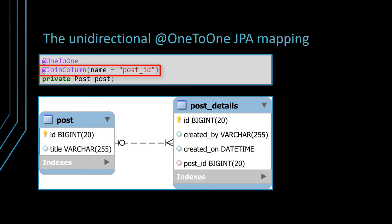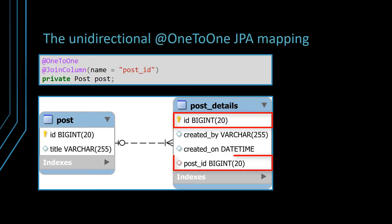In our case, the JoinColumn annotation is redundant since the postId foreign key column is expected to be found in the postDetails table. The problem with this mapping is that the primary key and the foreign key columns are separated. That means we need an index for the primary key and another one for the foreign key. So a better mapping would be if we could use a single column which is both the primary key of the child table and the foreign key to the parent table primary key.